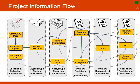One of the first steps of defining and planning for MIS is to understand information flows in the project. There are six basic processes that define these flows: locating and collecting community data, organizing and storing the data, the analysis and reporting of information, and the use of information by primary and secondary recipients.